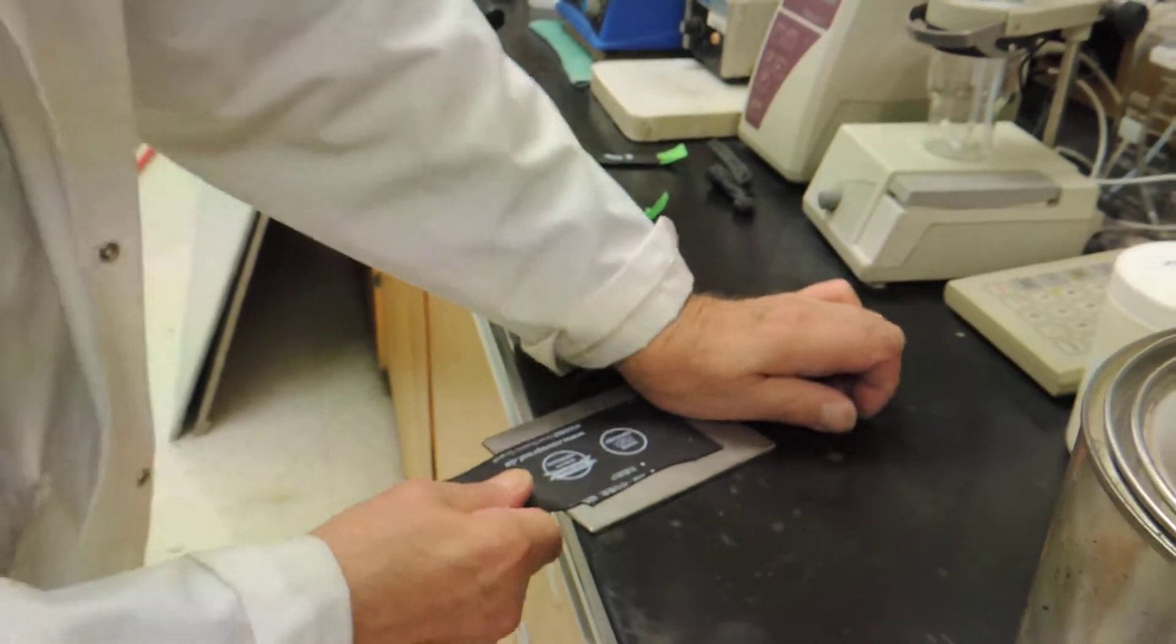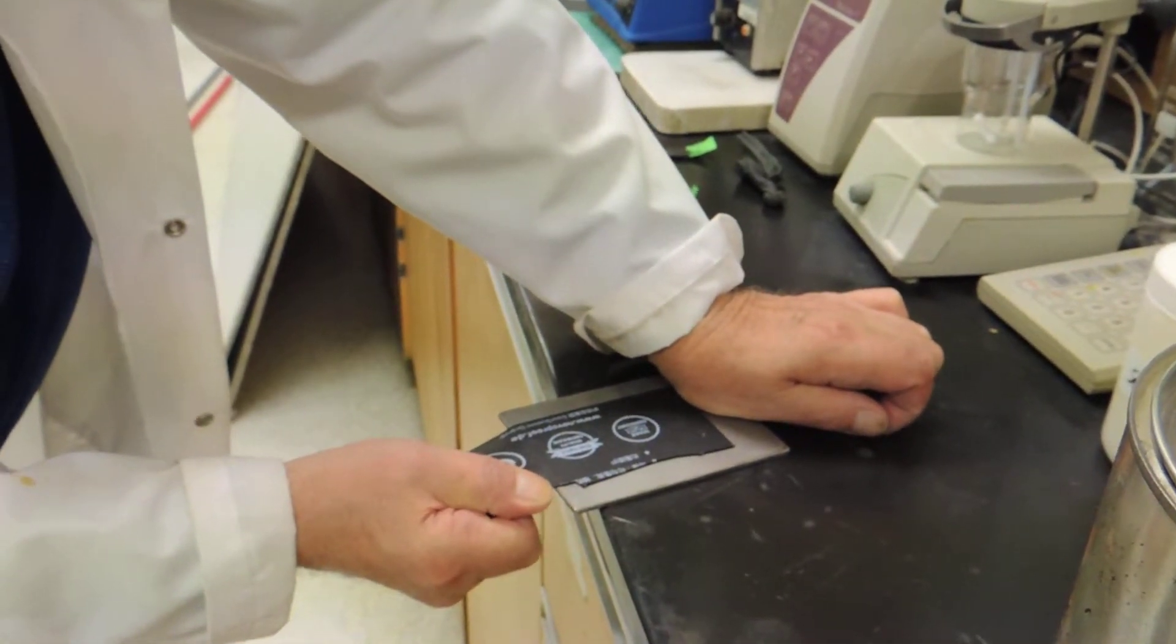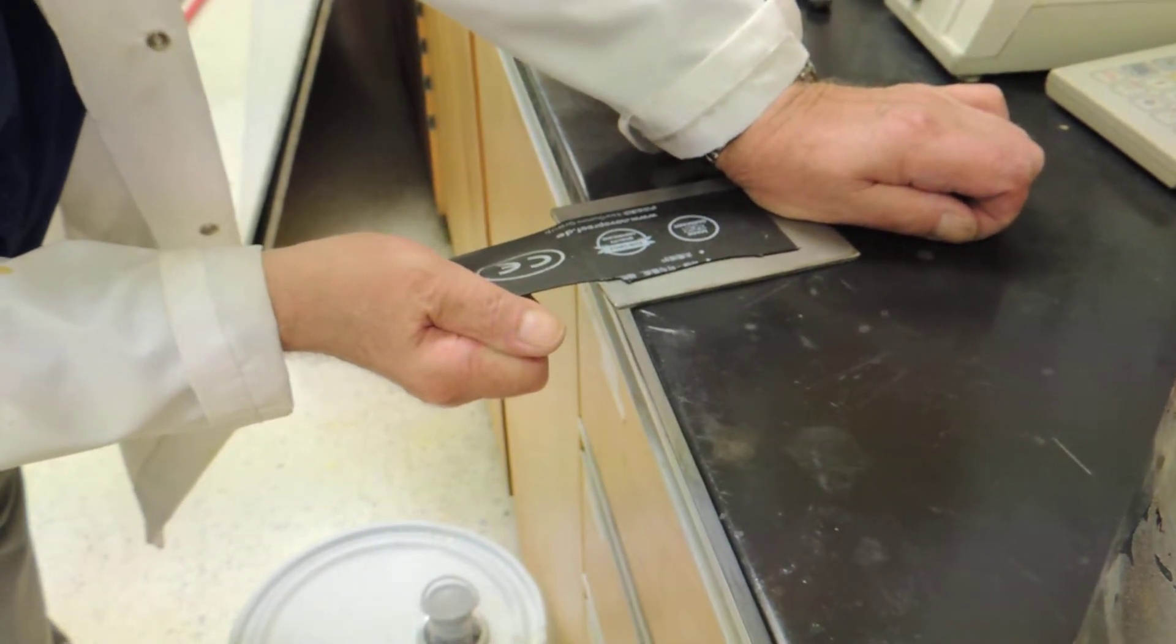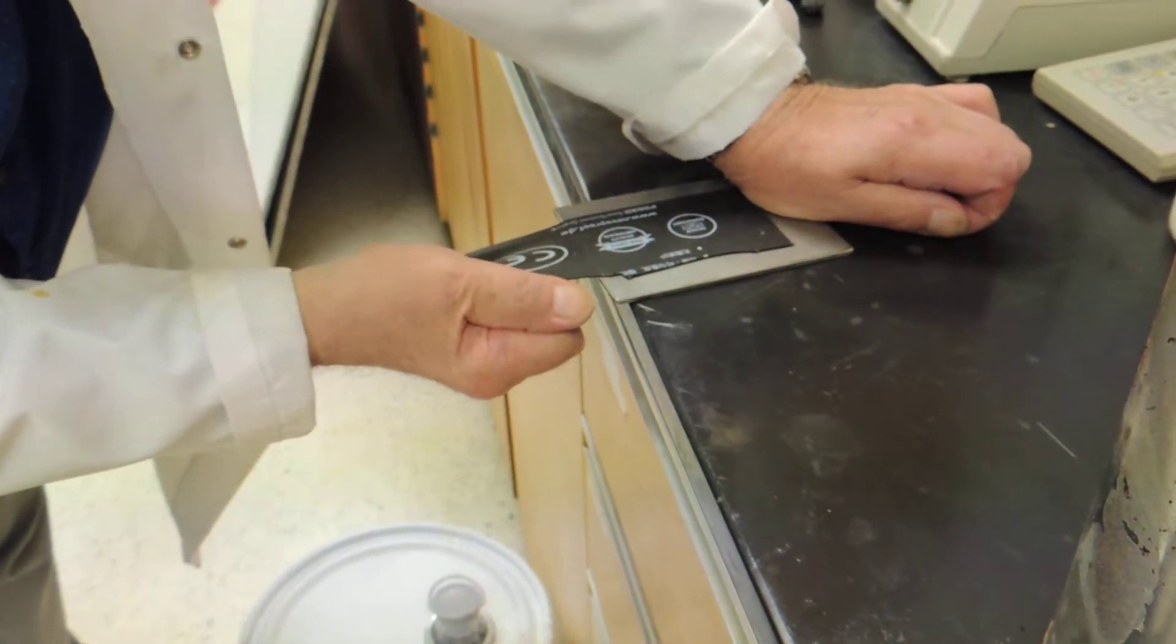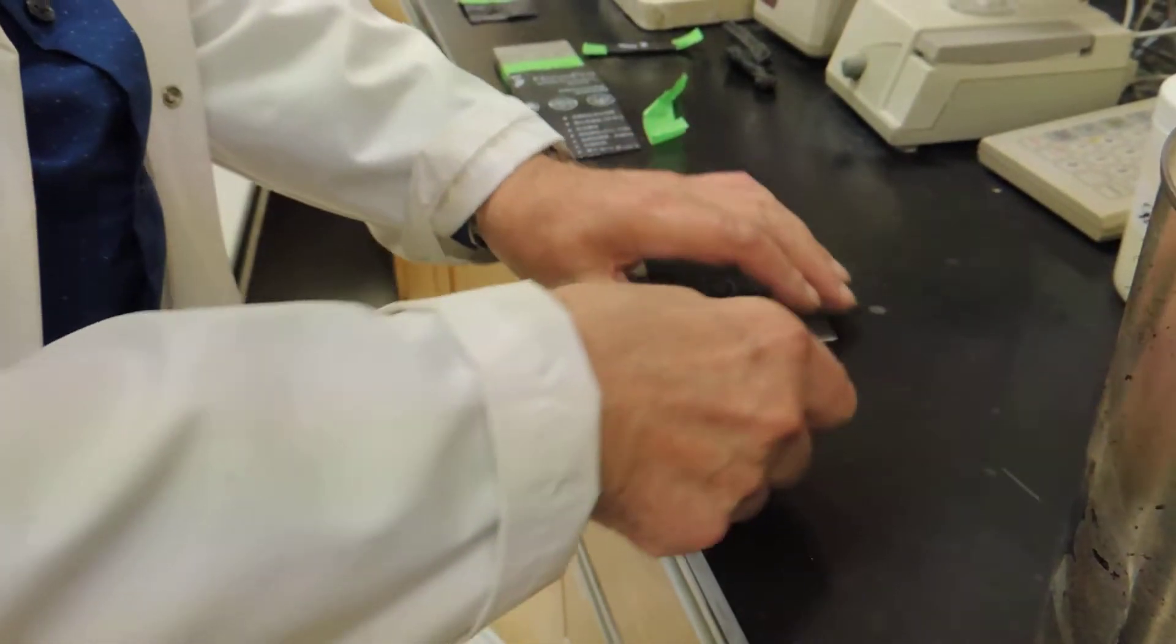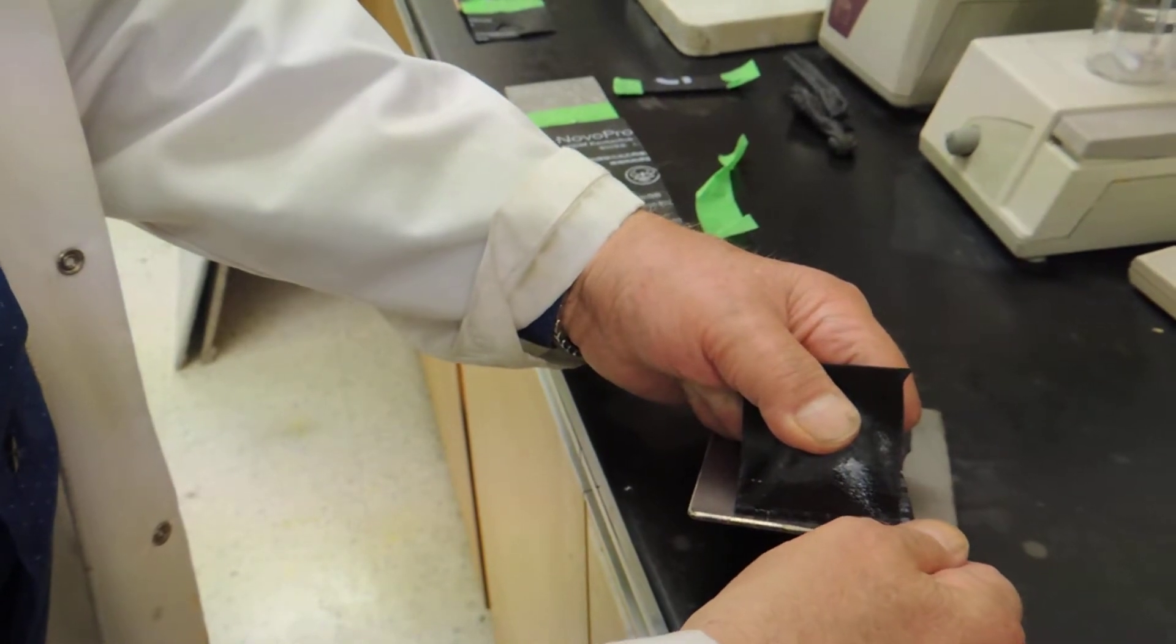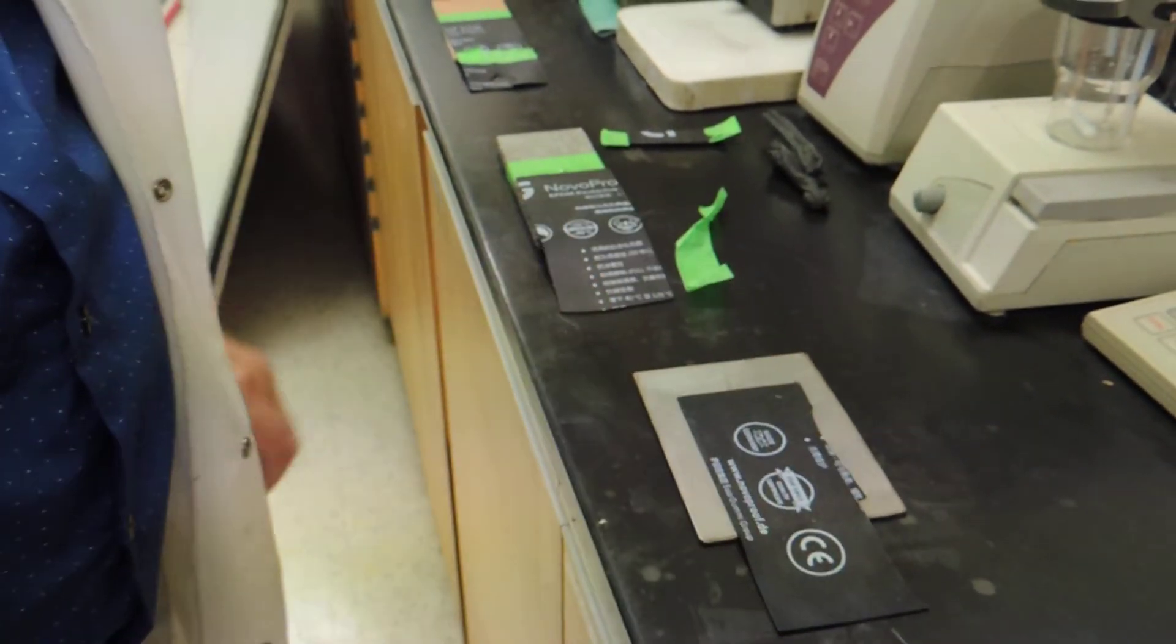We will now try to remove the EPDM from the stainless steel panel. We can see that the EPDM is stretching out. I am exerting a great deal of pull pressure on it, and there is no movement at all. The shear strength is extraordinarily high. You cannot remove it. The adhesion and the wetting out of the EPDM and the steel panel is quite extraordinary.